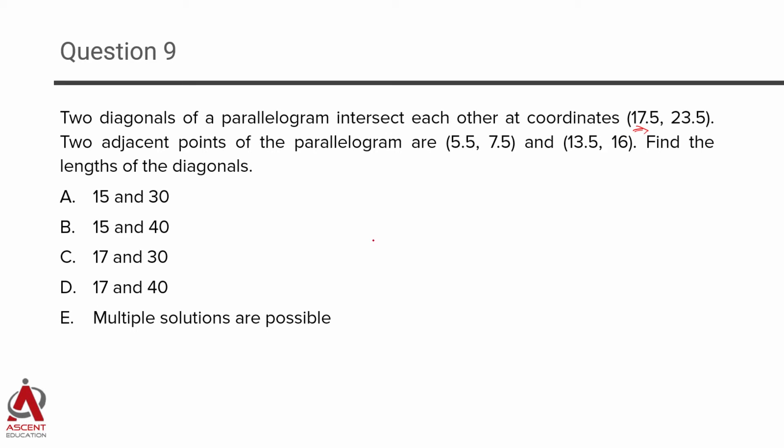The two adjacent points of the parallelogram are the given two points which are adjacent points of the parallelogram. The coordinates are 5.5 and 7.5, and 13.5, 16. What we need to find out is the lengths of the diagonals.